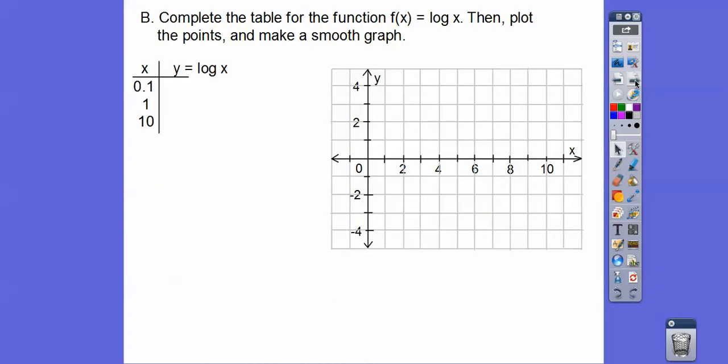Let's complete the table for the function log(x). Now remember, if there's no base given, it's understood to be base 10. These are what our calculators are programmed for. So if we plugged in 0.1 and hit our log button, you get negative 1. So here's the graph of 0.1 and then negative 1.